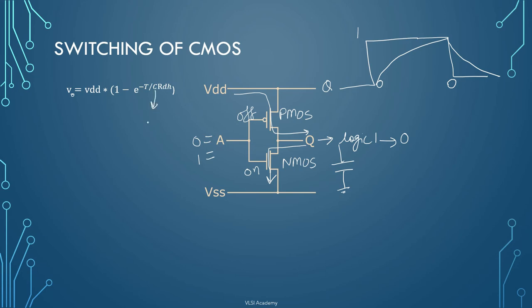So C here is capacitive load, which we have represented by this capacitor. R_DH is the resistance of the transistor. Here R_DH represents the drive high resistance of PMOS because it pulls the output load to logic high irrespective of previous value.